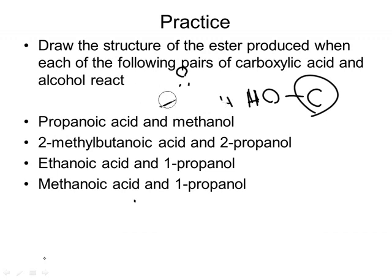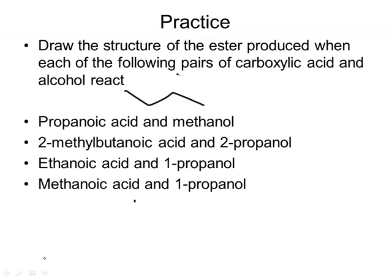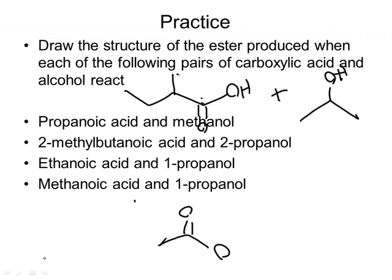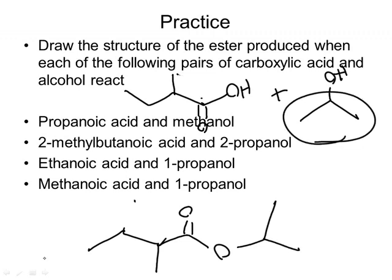The second one is 2-methylbutanoic acid and 2-propanol. So 2-methylbutanoic acid has four carbons with a methyl on carbon 2, drawn with the carboxylic acid group. And 2-propanol. What I'm going to get is: I draw the carboxylic acid portion — four carbons — and then sticking off of the oxygen is my alcohol right here.